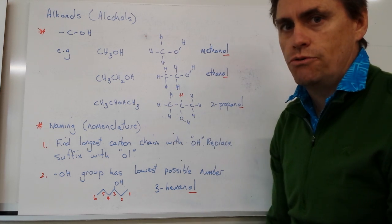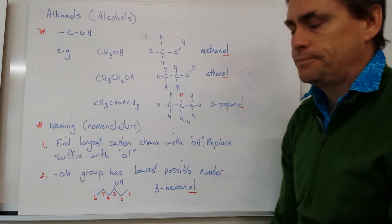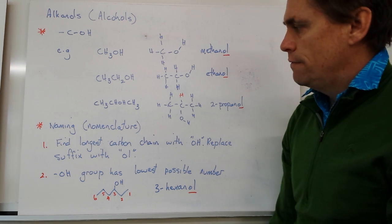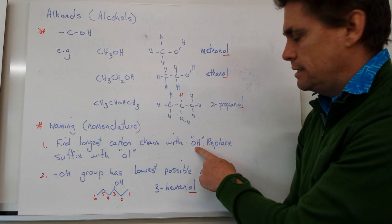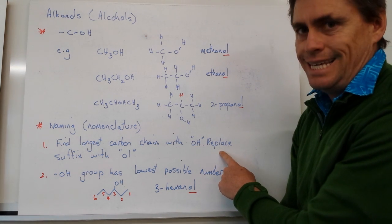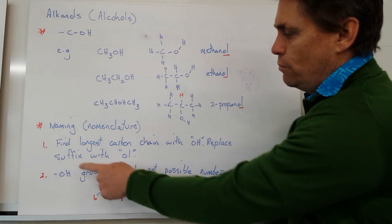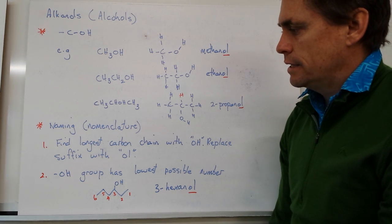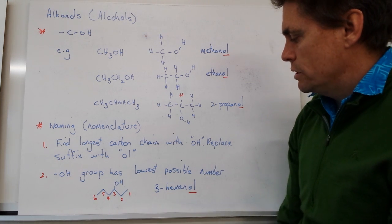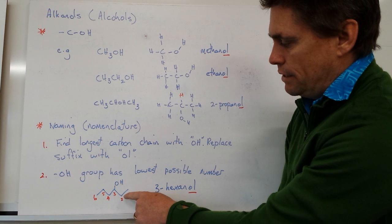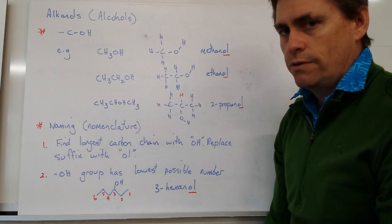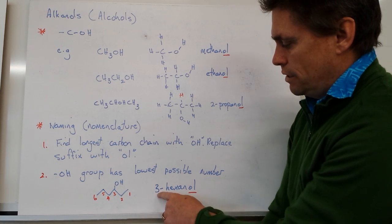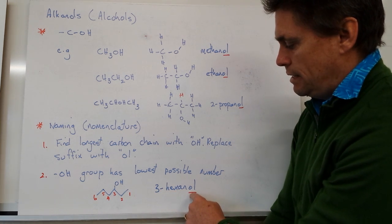So how do we name alkanols or alcohols? There are really two rules. First one is find the longest carbon chain that contains the hydroxy group or OH group and replace the suffix E on the end of our alkane with the suffix OL. We've also got to take into consideration that our hydroxy group or OH group has the lowest possible number. Our molecule down here is a hexane with an OH group. We look for the lowest possible numbering system for that OH group, so we go one, two, position number three. So this one is going to be 3-hexanol. We drop the E and add OL, so we get 3-hexanol.